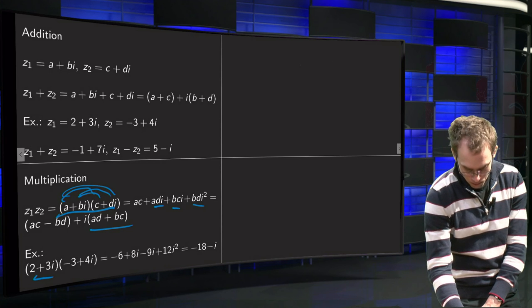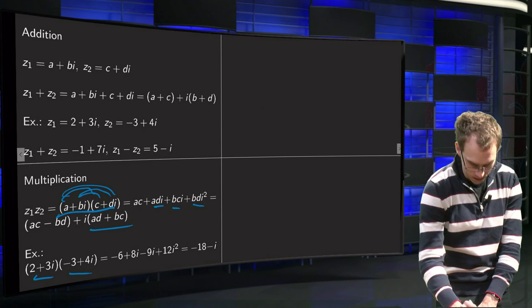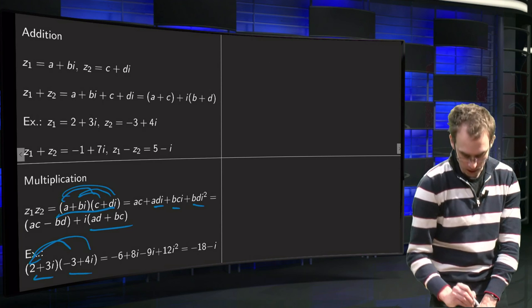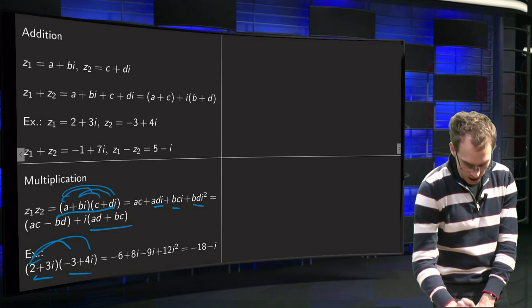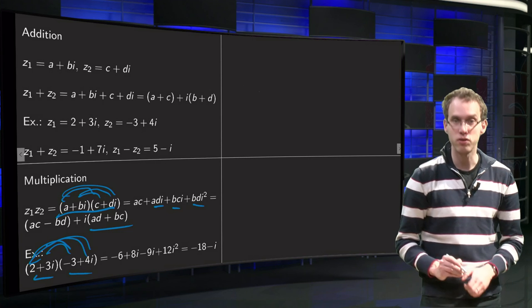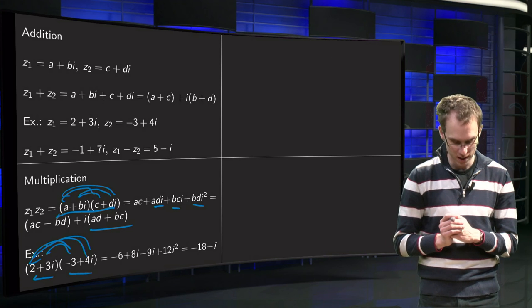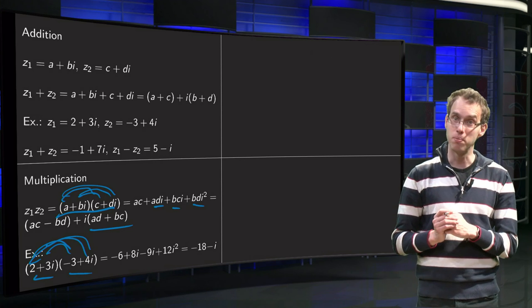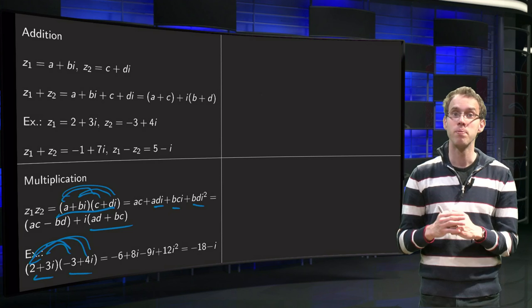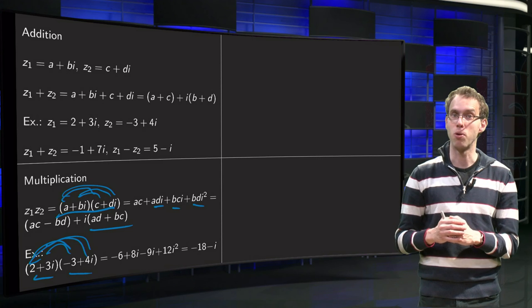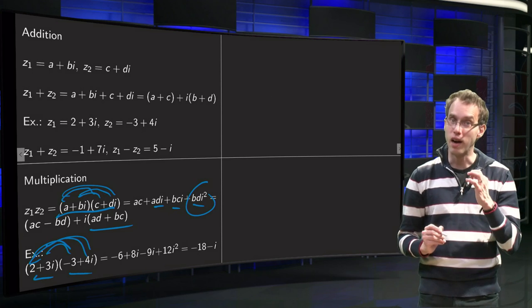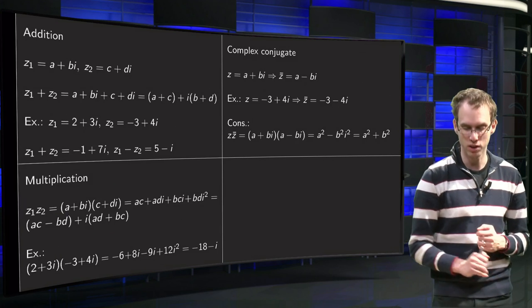So we have (2 + 3i)(-3 + 4i). How do we compute that? Well, 2 times -3 equals -6. 2 times 4i is 8i. And 3i times -3 is -9i. And 12i² equals -12. So what do we get? -6 - 12 equals -18. And 8i - 9i equals -i. So that is how you multiply two complex numbers. And notice that you use this definition of i², our new imaginary unit.